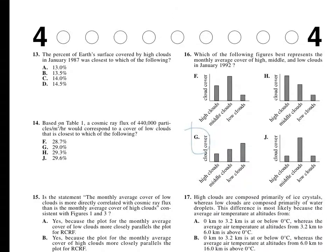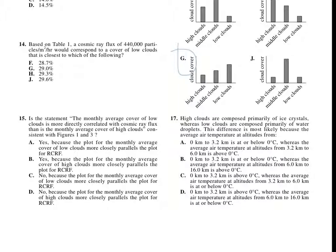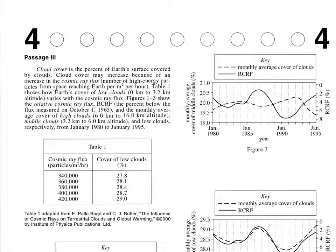Problem 17. This is the last one we're doing. And it is, high clouds are composed primarily of ice crystals, whereas low clouds are composed primarily of water droplets. The difference is most likely because the air temperature at altitudes from, they have 0 kilometers to 3.2 kilometers, and it's above or below 0 degrees Celsius. So, I'm finding that here it says, the earth cover of low clouds, 0 kilometers to 3.2 kilometers. So that means the low clouds are at 0 kilometers to 3.2 kilometers. And then over here it says, high clouds, 6 to 16 kilometers.